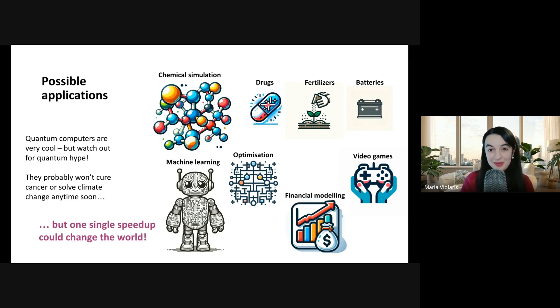But it's also important to keep in mind the huge potential impacts of even just a single speed-up from a quantum computer. For example, if a quantum computer helps discover a new fertilizer, then that could have huge implications for the world globally if it improves food production.